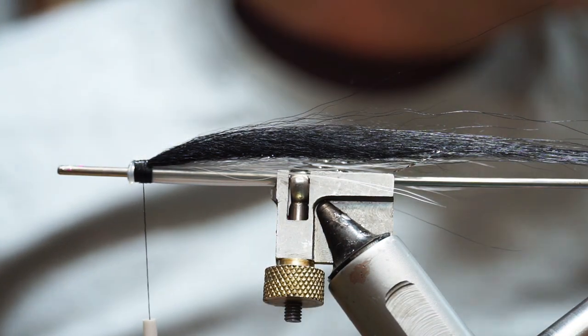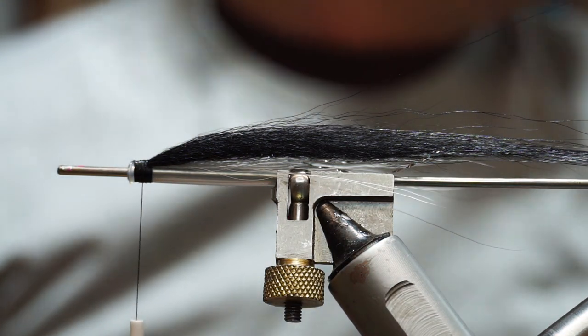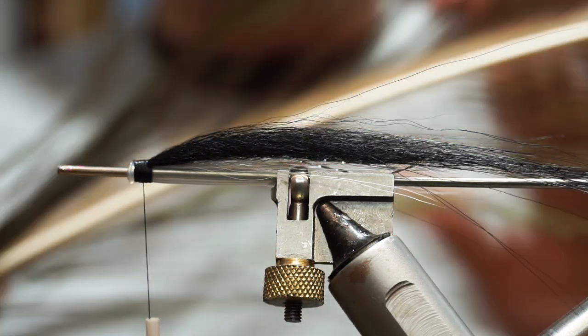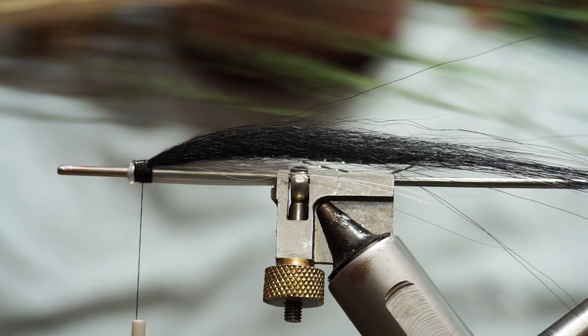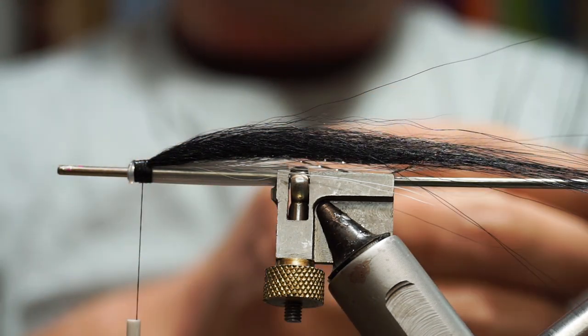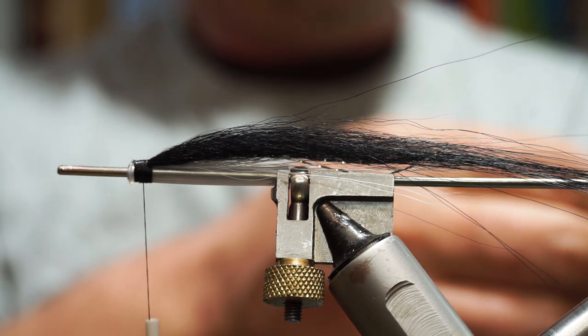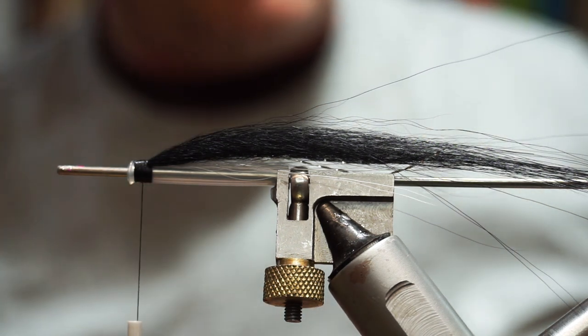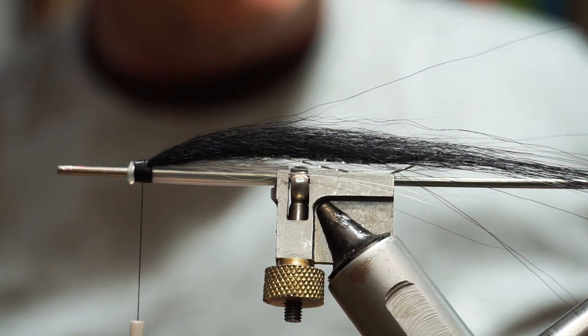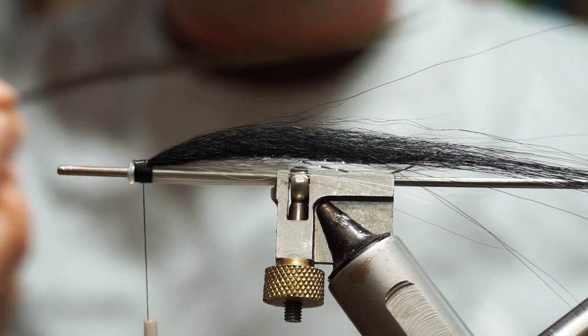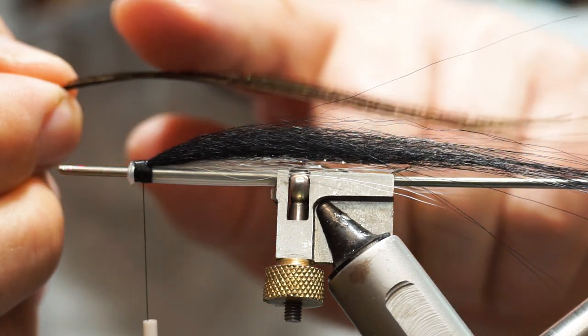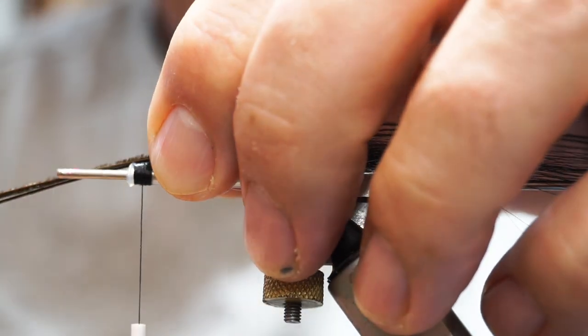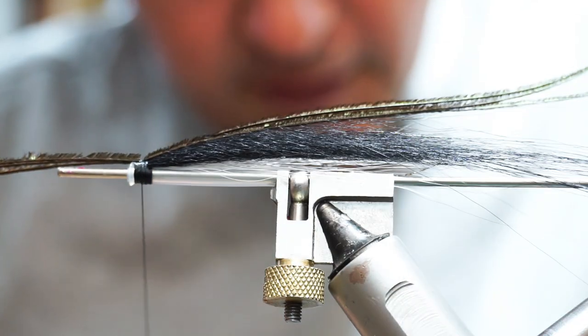And then to finish it off we want some peacock hurl. So for me, the best hurls for these are actually not up at the eye, they're on the actual stalk of a peacock feather. So just take a few from down there. If you want to be fancy you can match them up from either side. I'm going to match the tips up a little bit here and I'm utilizing this curvature here. I'm going to set that up on top and tie it in.